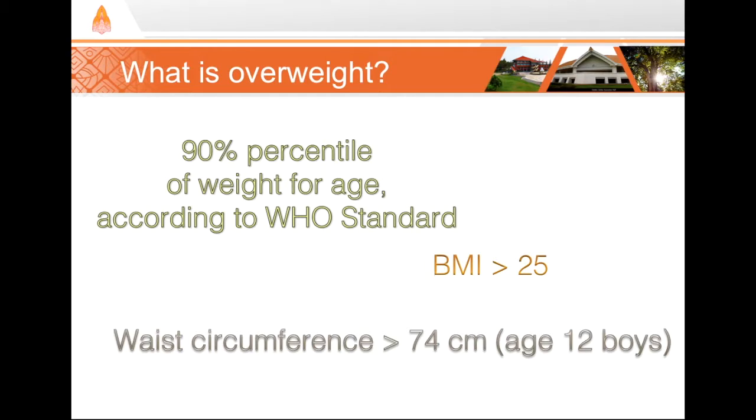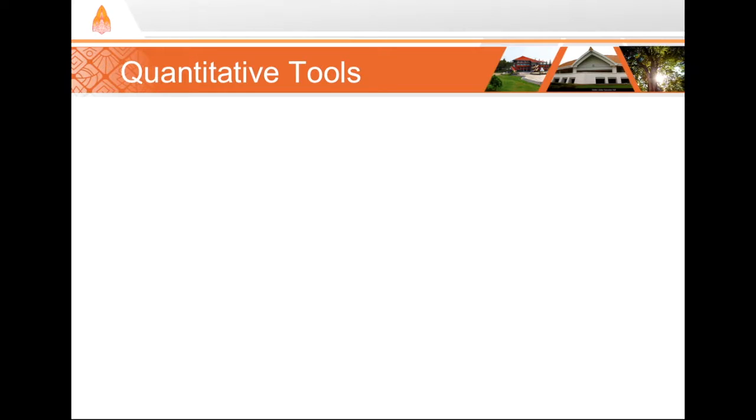Then we can calculate the proportion. So we need to know the children's waist circumferences. Well, we could answer this question many different ways, using each of the five main quantitative tools.